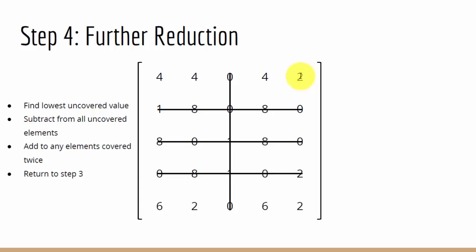We now need to subtract 2 from all uncovered elements. So 2 minus 2 would be 0, 4 minus 2 would be 2, again 2, 2, 4, 0, 4 and 0. We must also remember to add to any elements covered twice. So 1 plus 2 would be 3, 1 plus 2 would be 3, and 0 plus 2 would be 2.